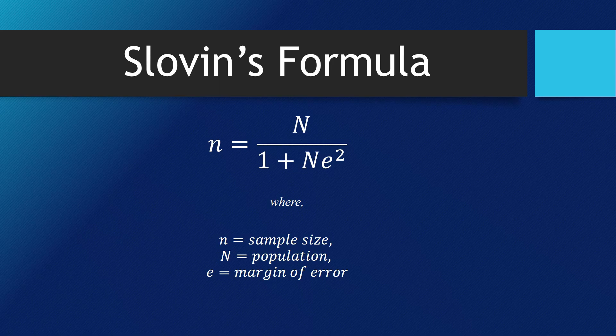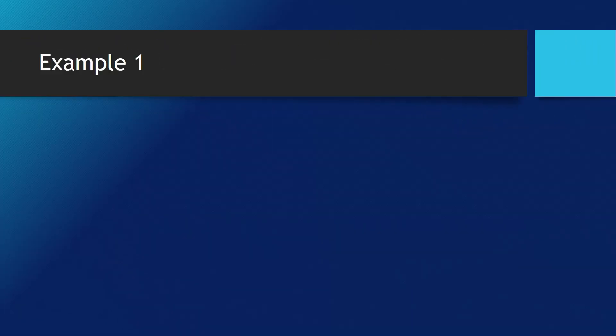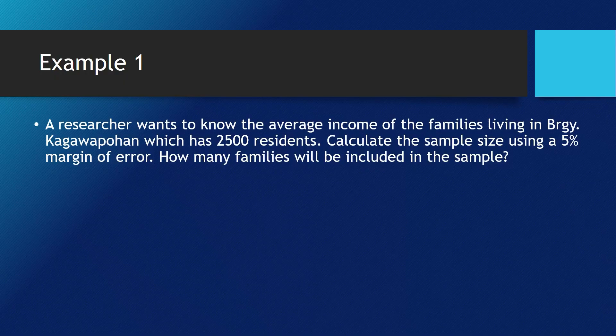Where the small letter n is the sample size, the big letter N is the population, and letter e is the margin of error. Let us have this example number 1. A researcher wants to know the average income of the families living in Barangay Kagwapuhan, which has 2,500 residents. Calculate the sample size using the 5% margin of error.